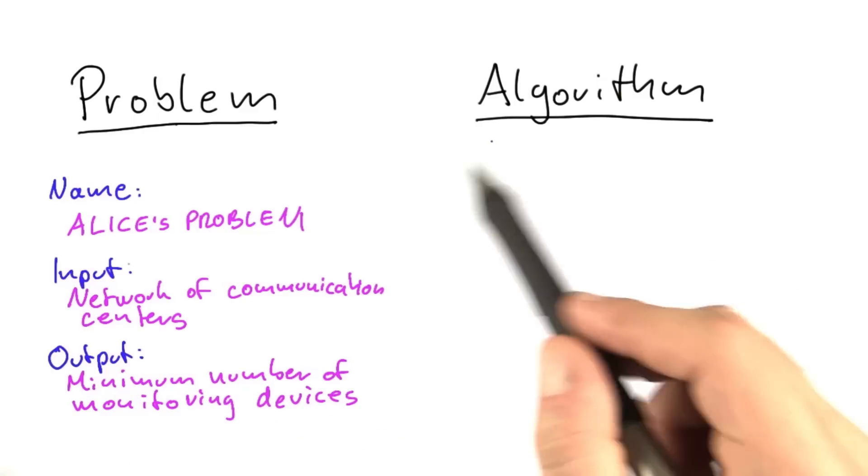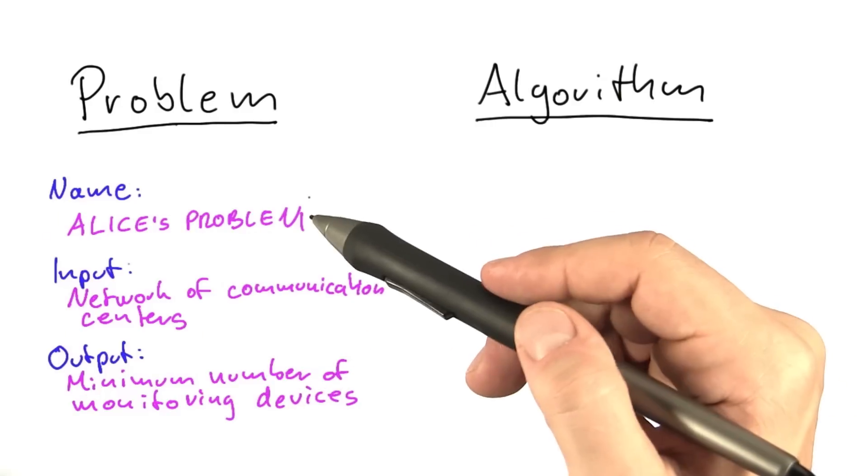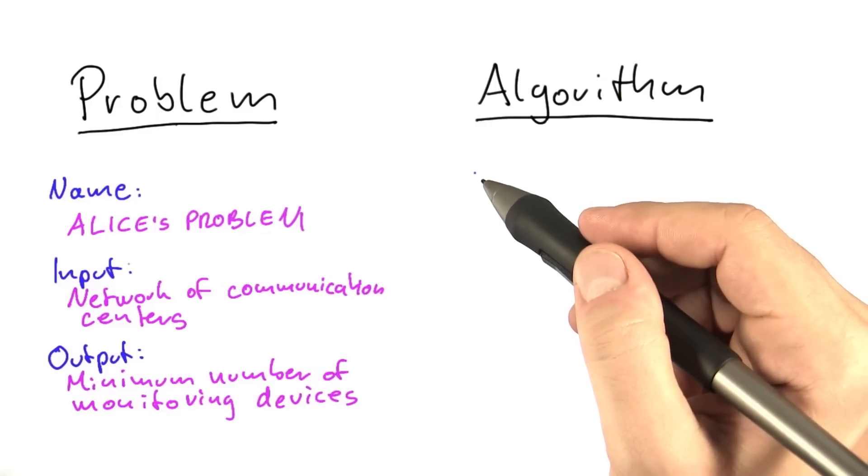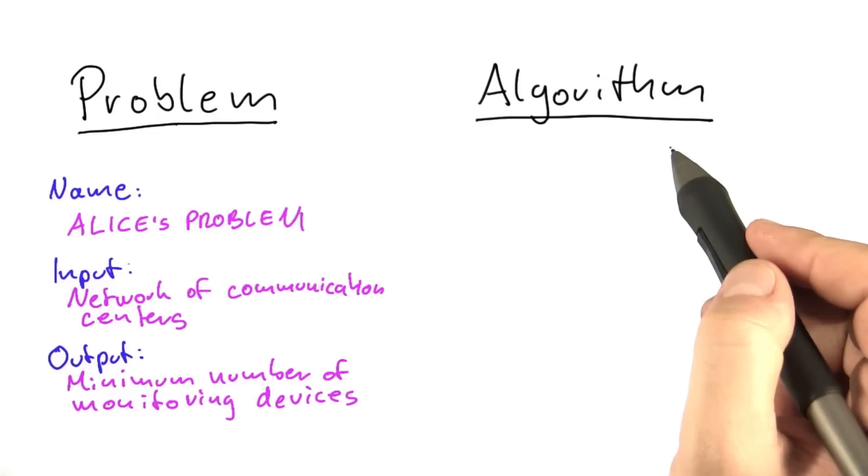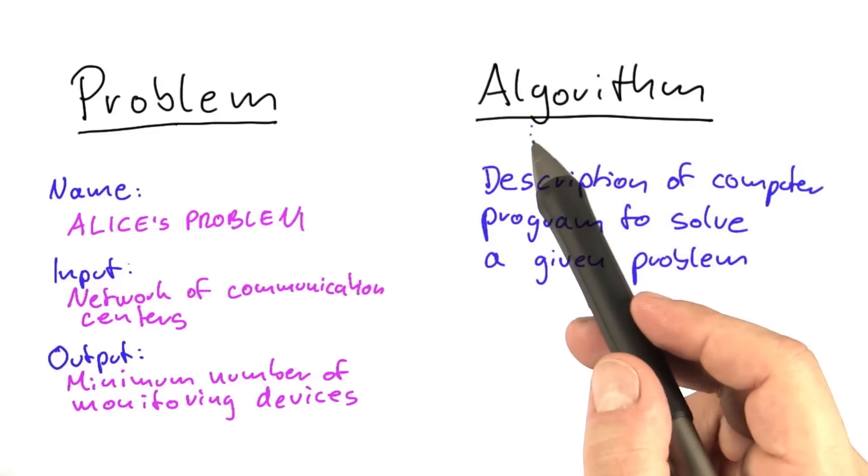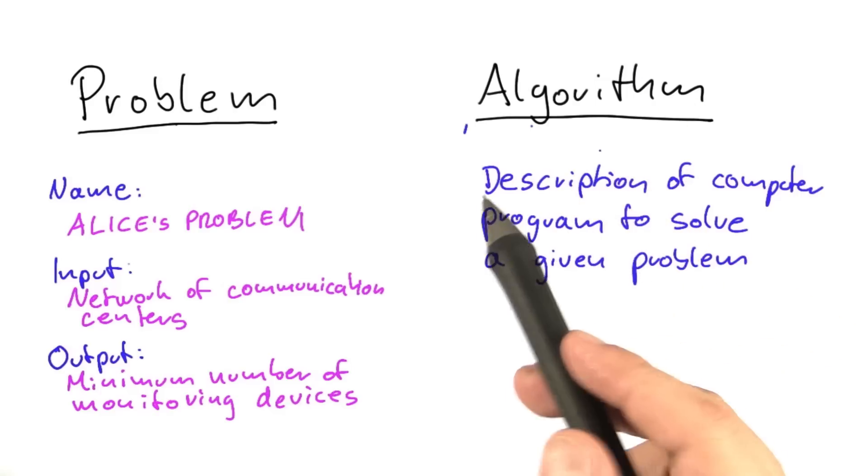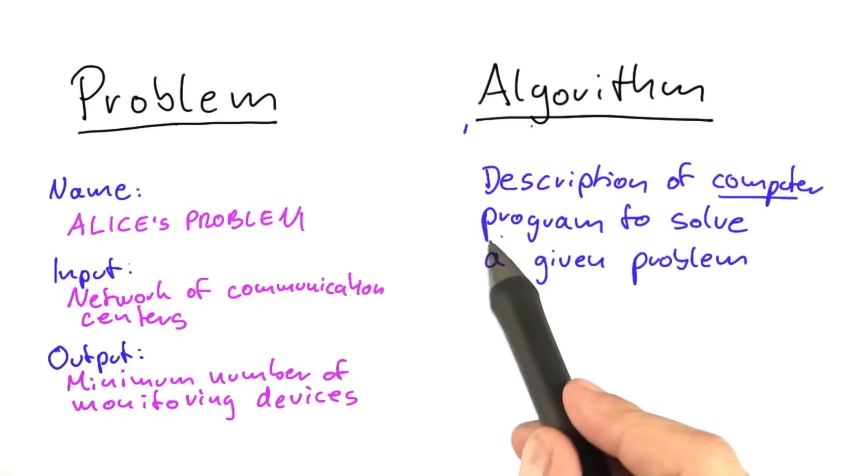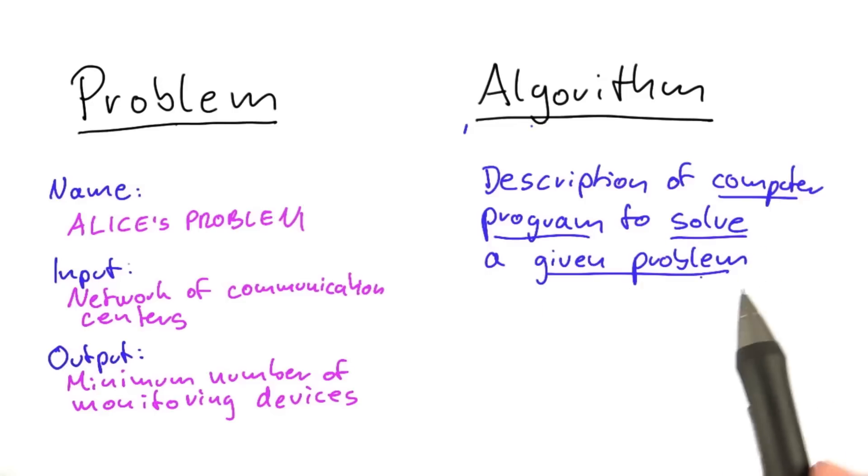What Alice devised to solve this problem was a possible algorithm. Now, there's no really accepted definition of what an algorithm actually is. But for us, it's enough to say that whenever we talk about an algorithm, we'll be talking about the description of a computer program that is able to solve the problem that we're given.